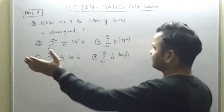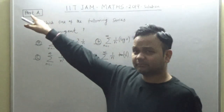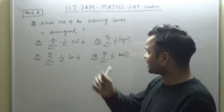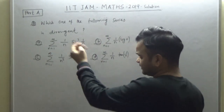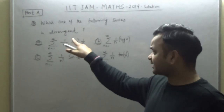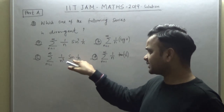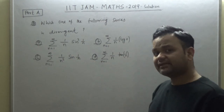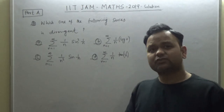The question asks: which one of the following series is divergent? This is from the IIT JAM Mathematics 2019 paper. The four options are: (A) sum of 1/n · sin²(1/n), (B) sum of 1/(n log n), (C) sum of 1/n² · sin(1/n), and (D) sum of 1/n · tan(1/n). Which series among these is divergent?